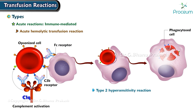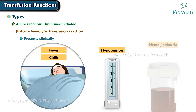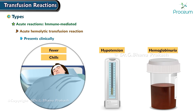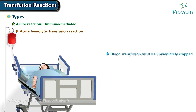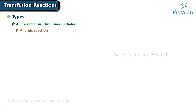Acute hemolytic transfusion reaction is a type 2 hypersensitivity reaction caused by mismatched blood transfusion. It presents clinically as fever, chills, hypotension, and hemoglobinuria. In such patients, blood transfusion must be immediately stopped, intravenous lines should be maintained with saline, and diuretics and analgesics can be added as symptomatic therapy.